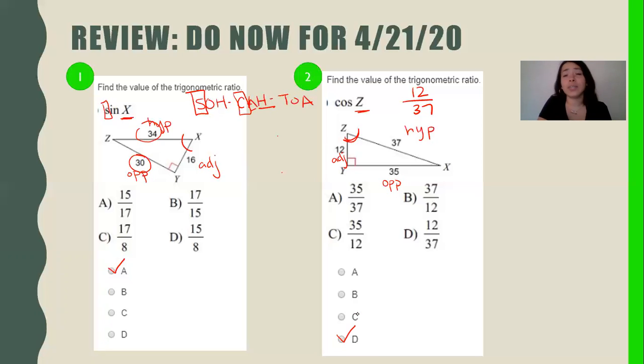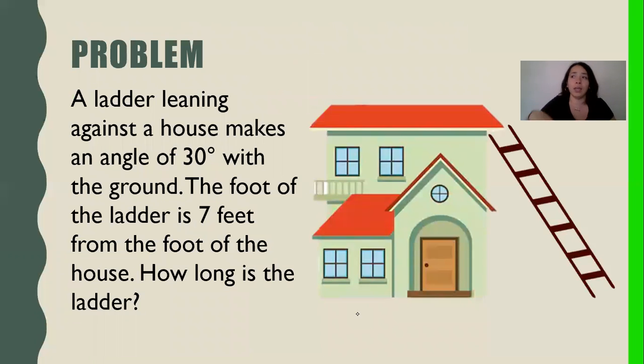Make sure to do the do now. It's only two questions. Just go back, get it done. You get full credit if you get both correct. If you don't get it correct, you can always take it again as many times until you get 100% on it.